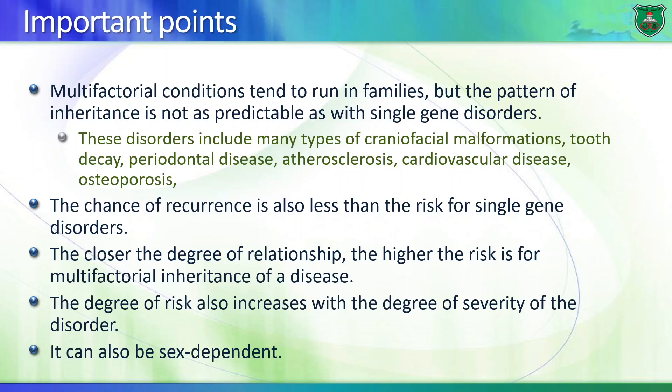The degree of risk also increases with increasing severity of the disorder. If an individual has a severe case of any one of these conditions, then the sibling — brother or sister — and the first cousin would also have an increased risk. The risk can also be sex-dependent.